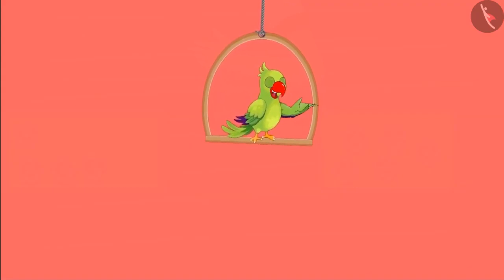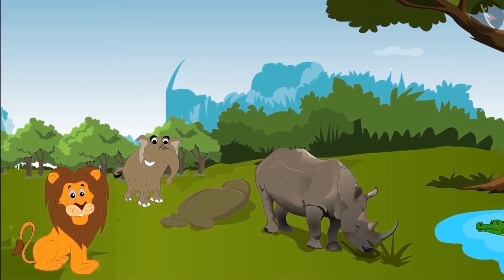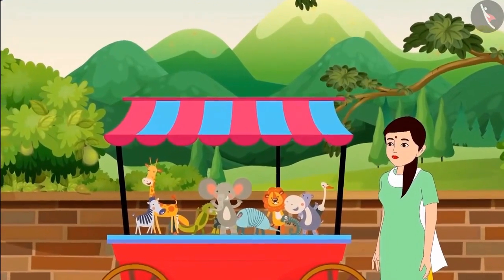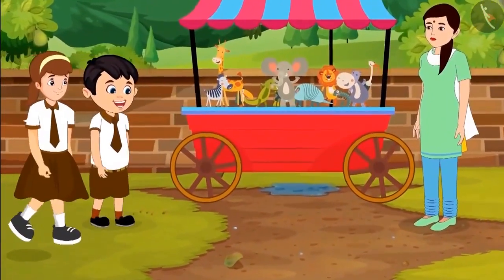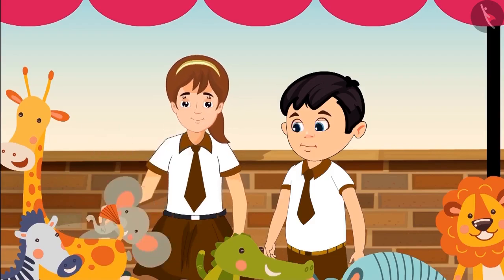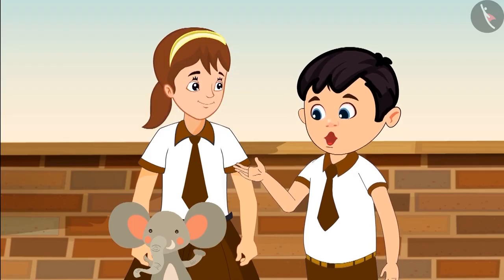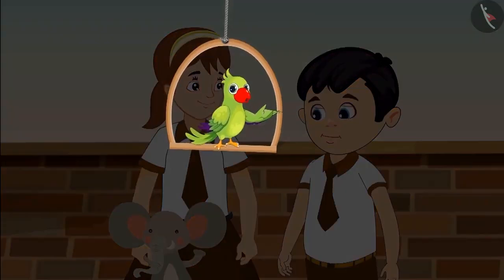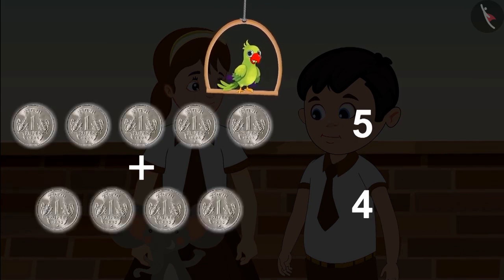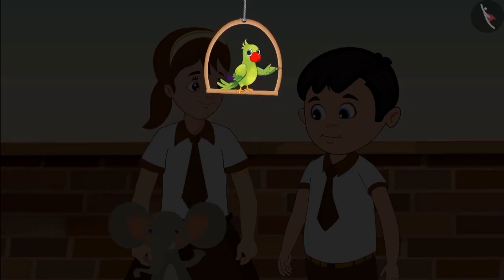Everyone ate and went inside the zoo to see animals — elephants, lions, rhinoceros, and crocodiles. Close by they saw a lady selling small stuffed toys of the same animals. Chotu and Aarti both really liked a stuffed elephant toy. Auntie, how much is this elephant? It's nine rupees. Aarti, I have five rupees. I have four rupees. Will they be able to buy the elephant? Let's see — Chotu has five rupees and Aarti has four rupees.